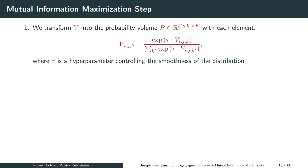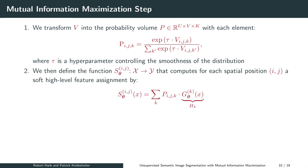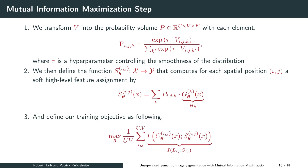To compute the soft assignments, we perform the following steps. First, we transform the mutual information volume into a probability volume by applying a scaled softmax operation, where tau is a hyperparameter controlling the smoothness of the distribution. We then define a function S that computes for each spatial position a soft high-level feature assignment. The assignments are computed as a weighted sum of the high-level features, whereby the entries of the probability volume define the weights. Using these soft assignments, we maximize the mutual information between the computed soft global feature assignment and the respective local feature for all spatial positions.